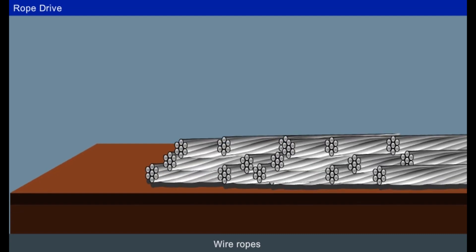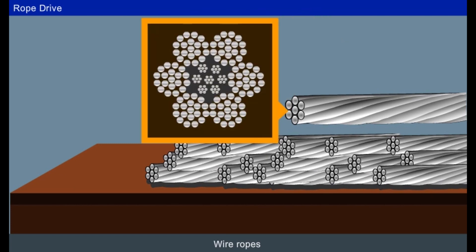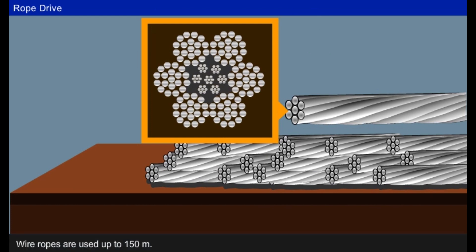Wire ropes are made up of steel wires. A number of thin wires are twisted to form a wire rope. These thin wires increase the strength of the rope. Wire ropes are used up to a distance of 150 meters.